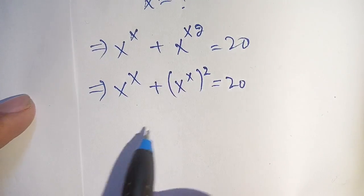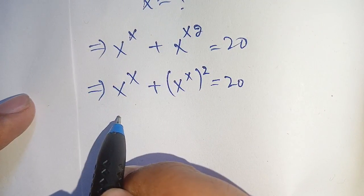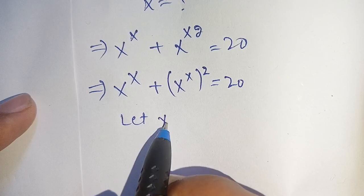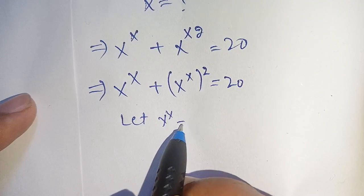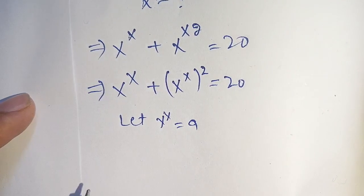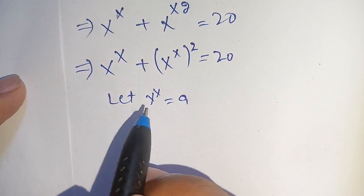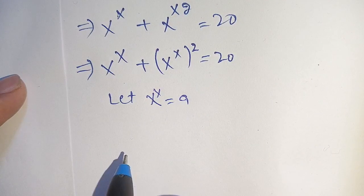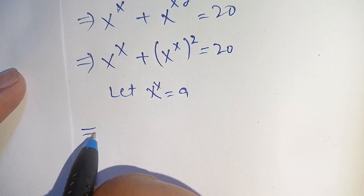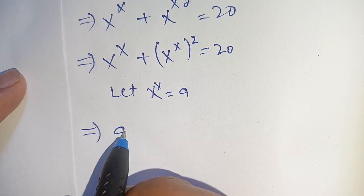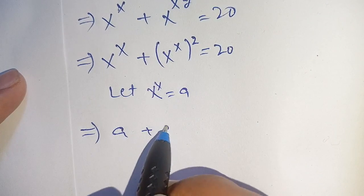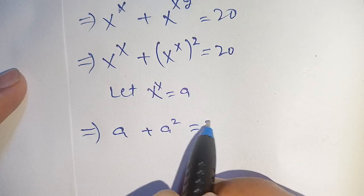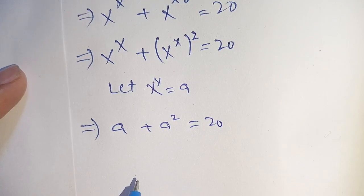Let us suppose that x power x is equal to a. Now in place of x power x we put a, then our equation will become a plus a power 2 is equal to 20.